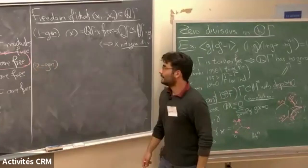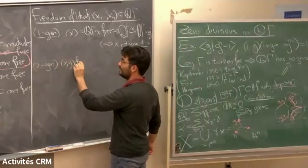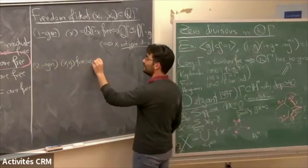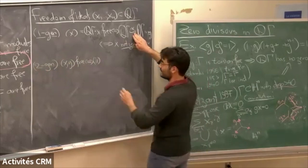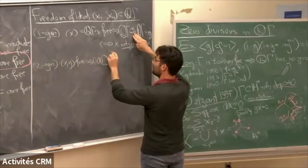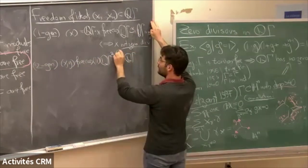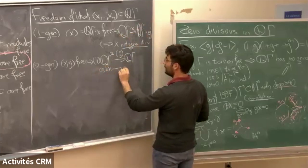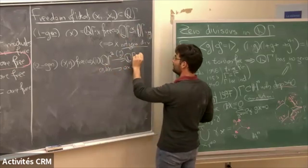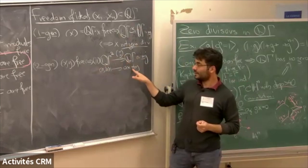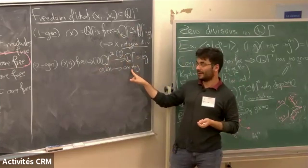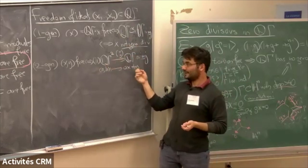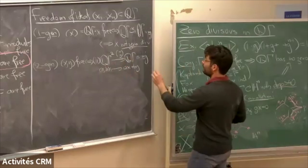What happens when you have two generators? If you have an ideal generated by two elements x and y, what does it mean for this ideal to be free? It turns out there are two possibilities. The second one is analogous to what we had before: there is a map from Z[gamma]² to Z[gamma] sending the pair (A, B) to Ax + By. The first possibility is that this map is injective, in which case the image — the ideal generated by x and y — is isomorphic to the domain, which is a free module.